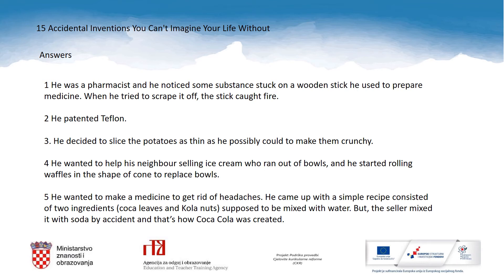Question 3: What did George Crump do after he received a lot of customer complaints about fries not being crispy enough? He decided to slice the potatoes as thin as he possibly could to make them crunchy. Question 4: How did the idea of inventing the ice cream cone come to Ernest Hamwi's mind? He wanted to help his neighbor selling ice cream who ran out of bowls, and he started rolling waffles in the shape of a cone to replace bowls. Question 5: Was John Pemberton the one who invented Coca-Cola? He wanted to make a medicine to get rid of headaches. He came up with a simple recipe consisting of two ingredients — coca leaves and cola nuts — supposed to be mixed with water. But the seller mixed it with soda by accident, and that's how Coca-Cola was created.